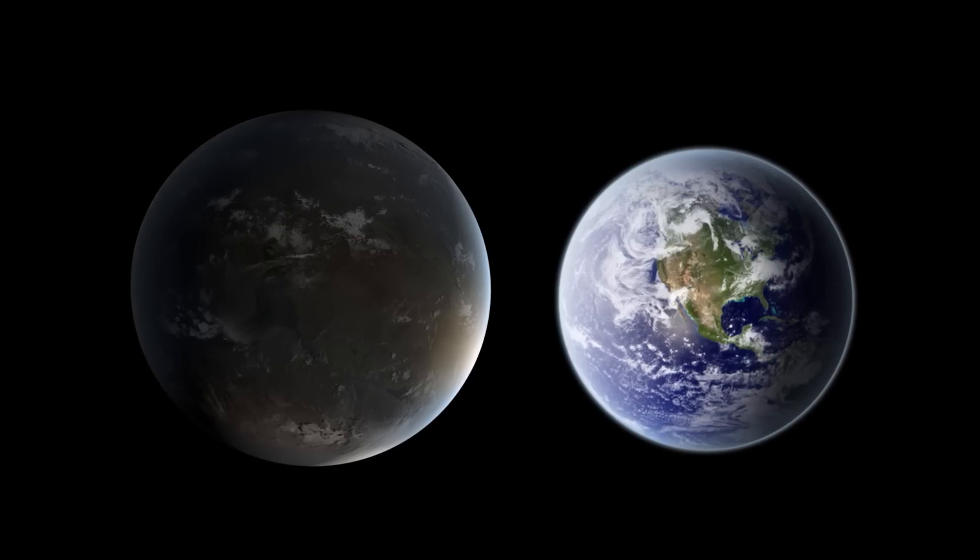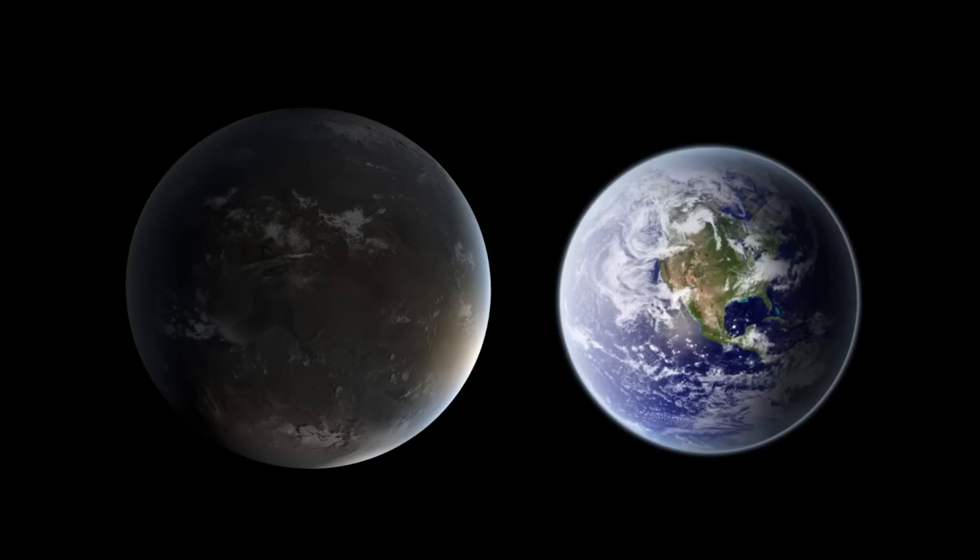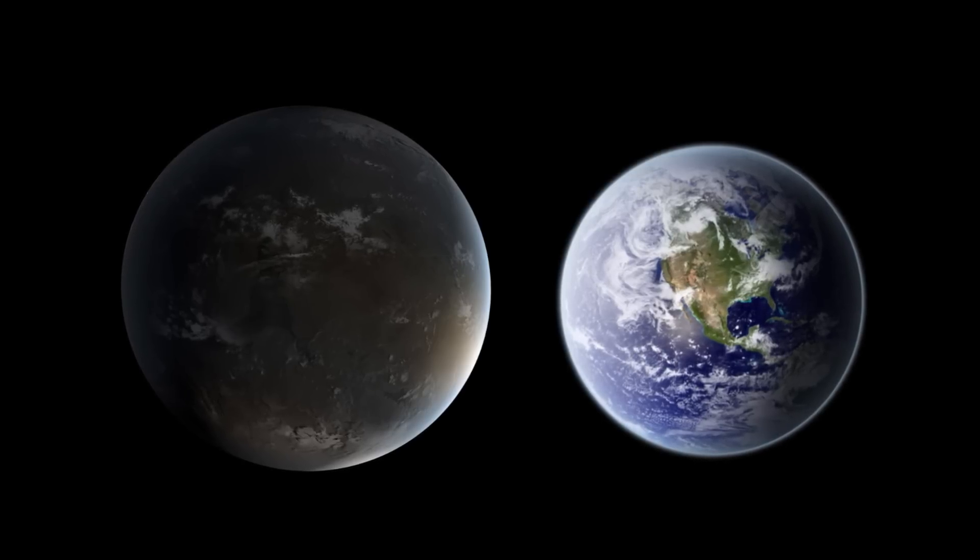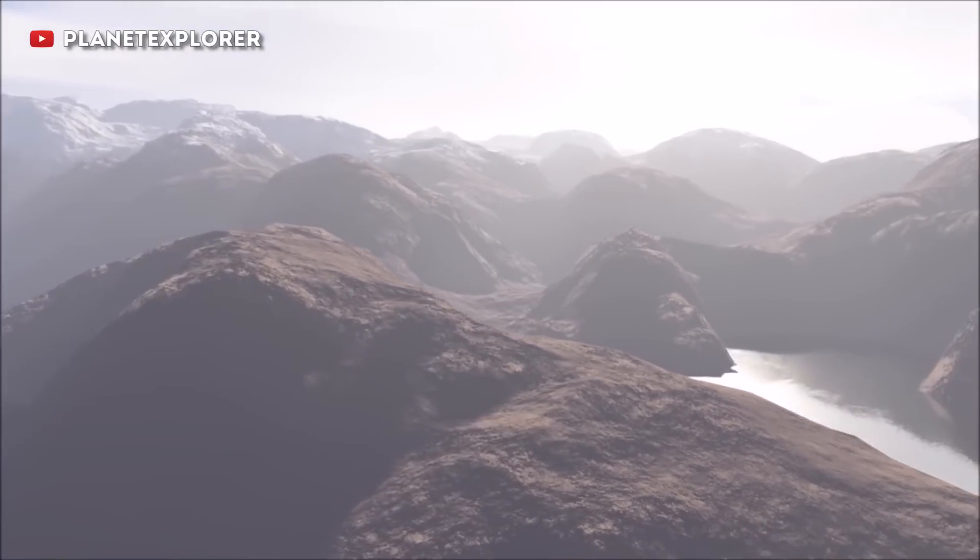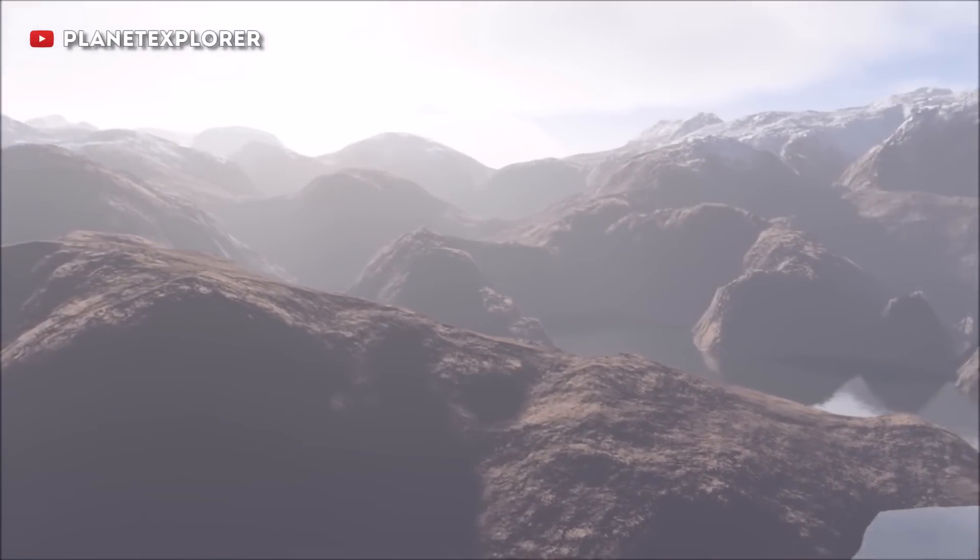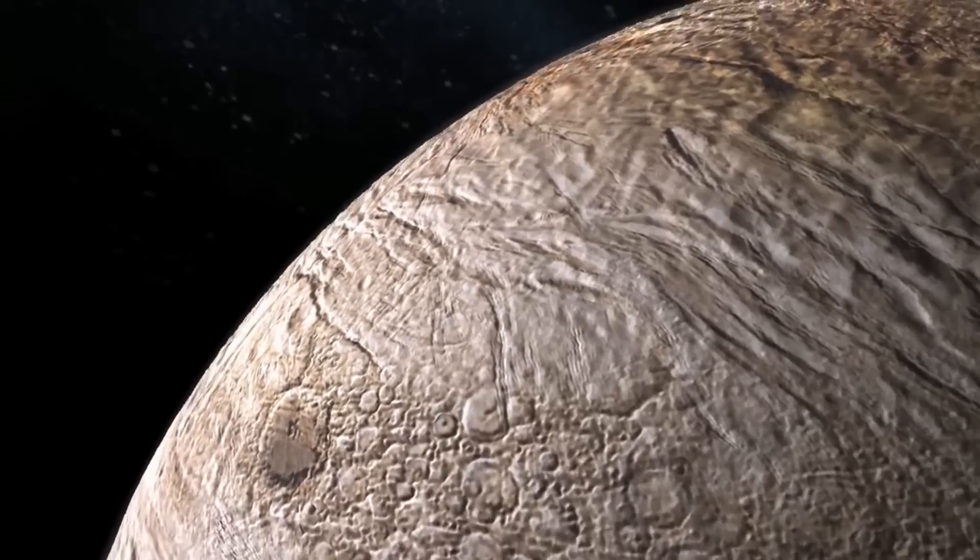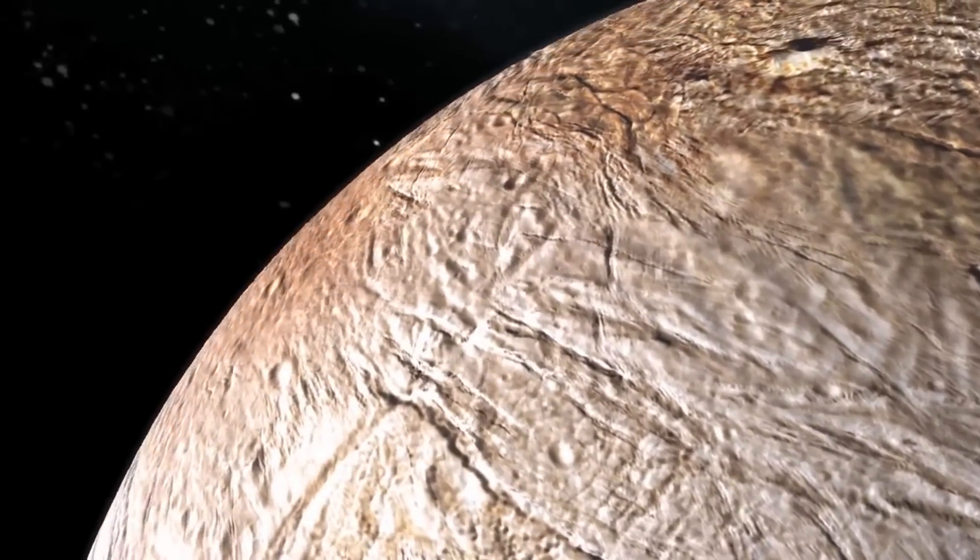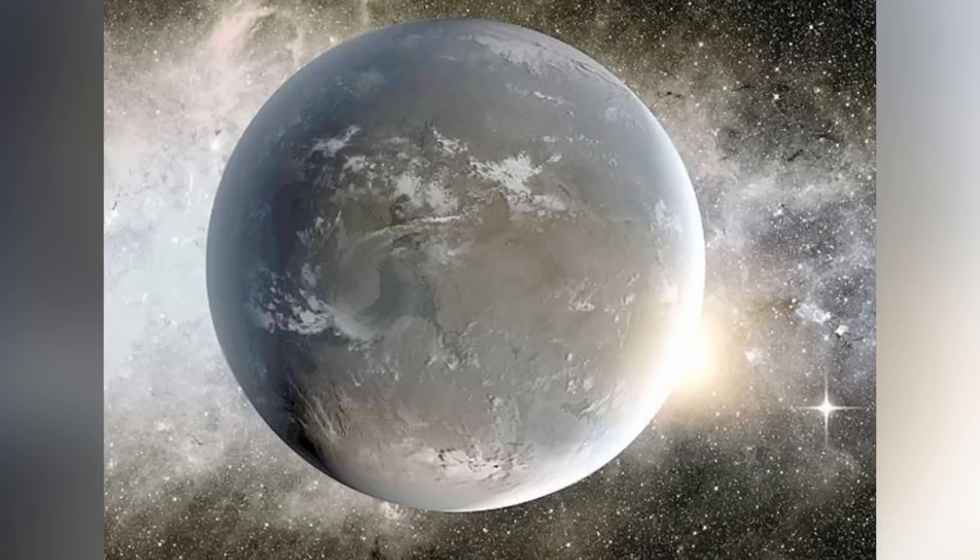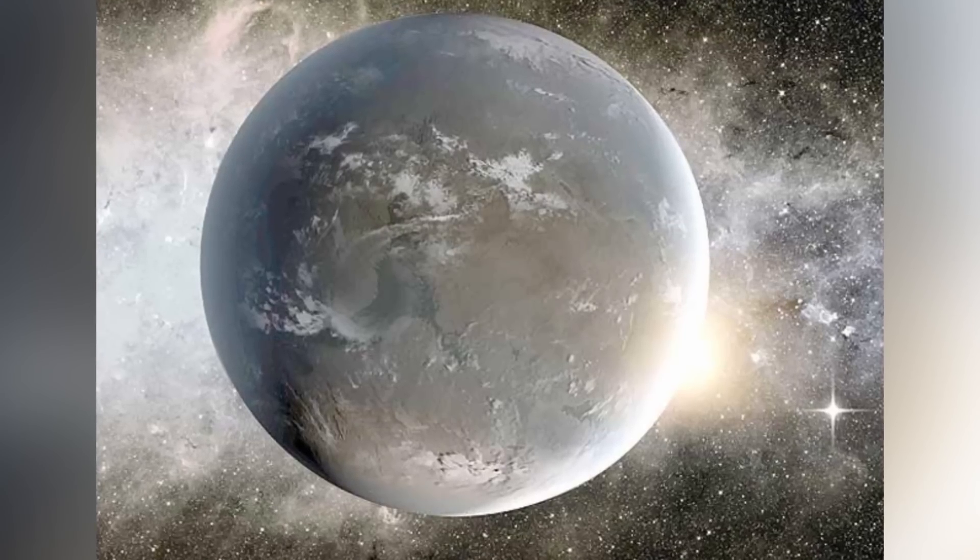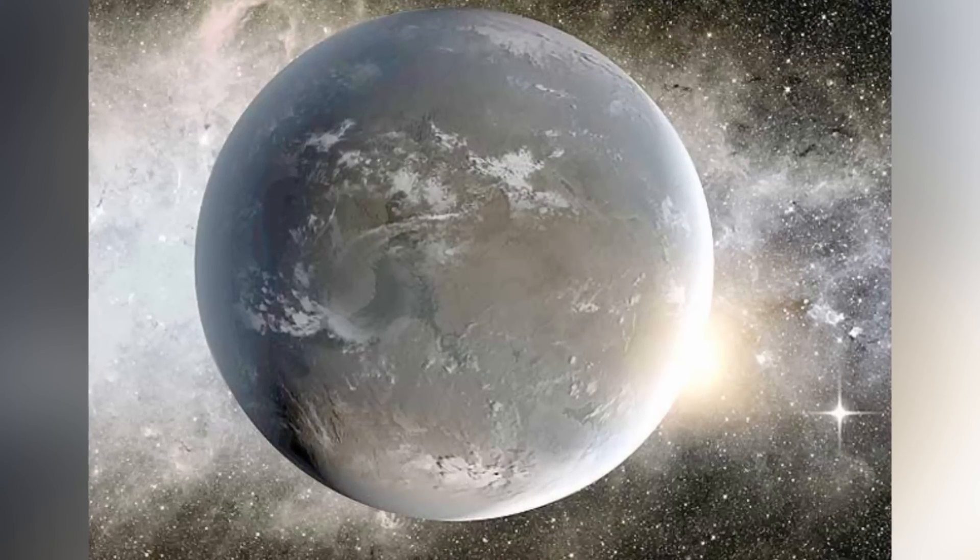At 1.4 times larger than Earth, and with an orbital period of 267 days, life on 62f would be fairly similar to life on Earth, that is, of course, if its atmosphere were similar to that of our own. As of now, much remains unknown about the theoretically habitable planet, including whether or not it's mostly terrestrial or predominantly covered in water.